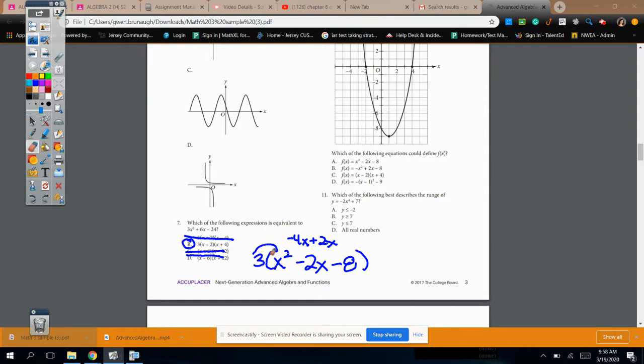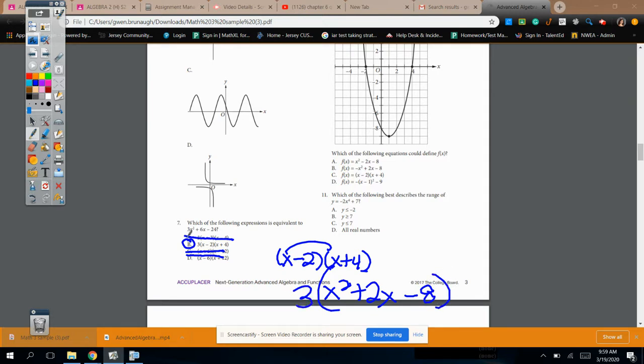Now, some of you don't like to circle answers by default. You like to make sure that you can see that it's right, and that's fine. If I take x minus 2 times x plus 4, that's x squared plus 4x minus 2x, which is plus 2x minus 8. Then distribute the 3, and that's the plus 6x that we need.